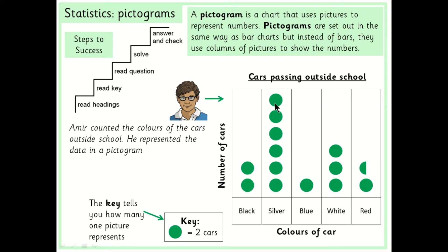So each of these green dots are not actually representing one they're representing two. So I need to count in twos to find out the number. So if I counted up my silver cars in twos two four six eight ten twelve I have twelve silver cars here.